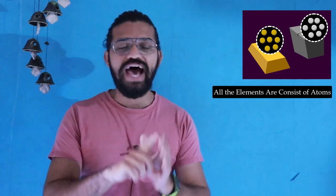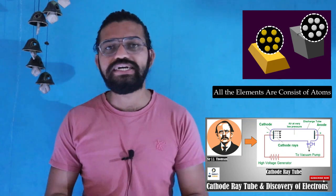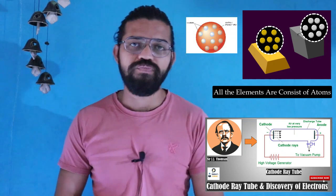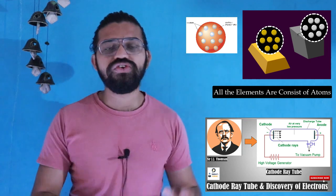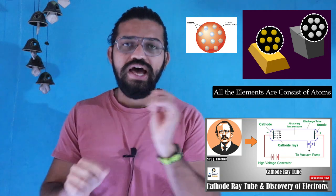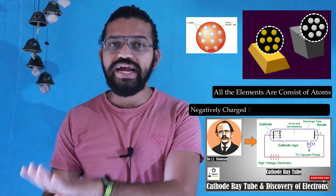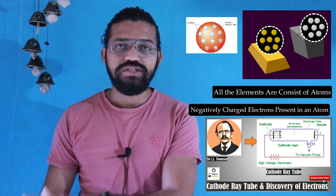Hi everyone, welcome back to another video of ENS Academy. From our previous video we learned that all elements consist of small particles named atoms, and these atoms have negatively charged electrons present in them. So the information we have is: all elements consist of atoms, and inside those atoms there are negatively charged electrons.